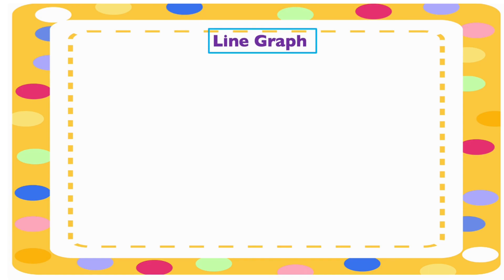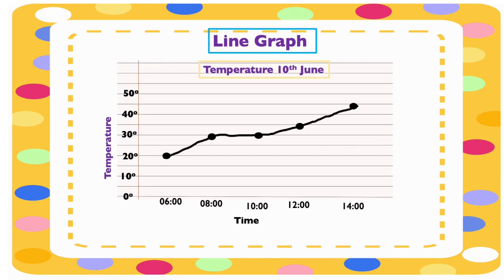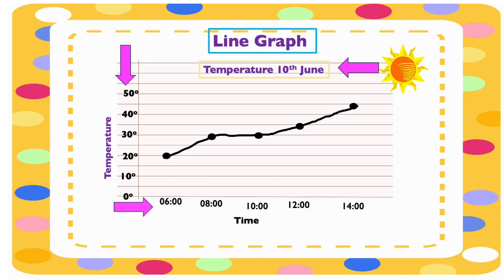This is a line graph. A line graph shows information on how data changes over time. This graph is showing the temperature on the 10th of June. At the left side, the numbers show the temperature in degrees and each small line is five degrees. At the bottom is the time of the day. The black line shows how the temperature changes at each time.